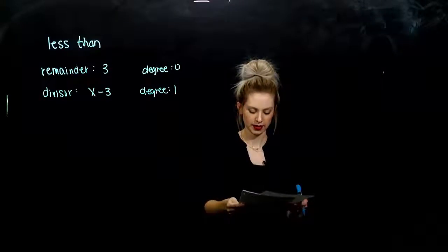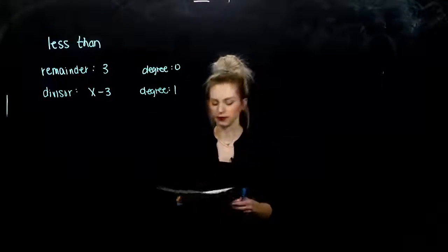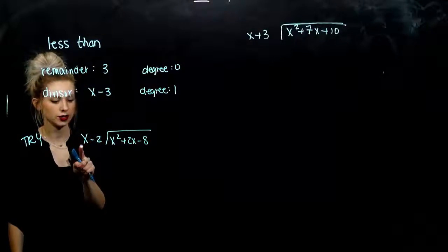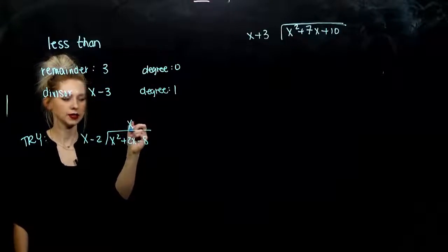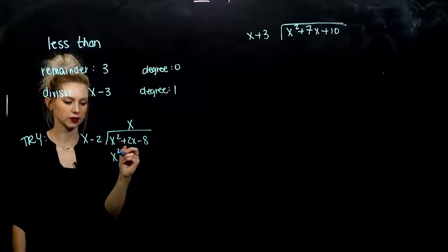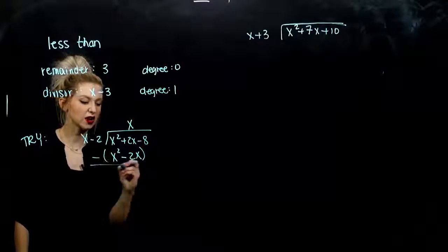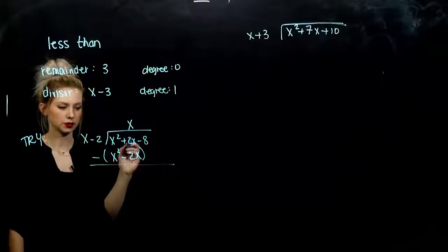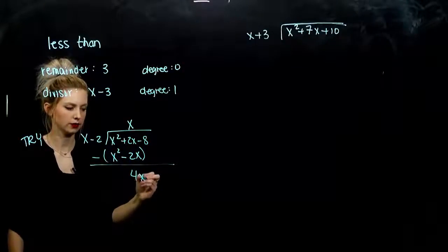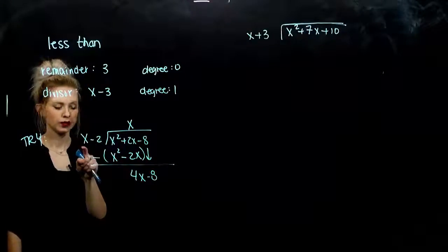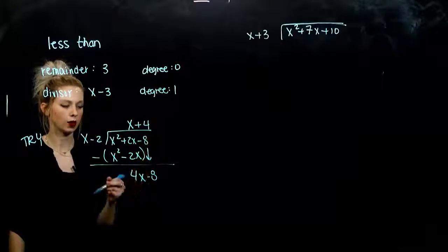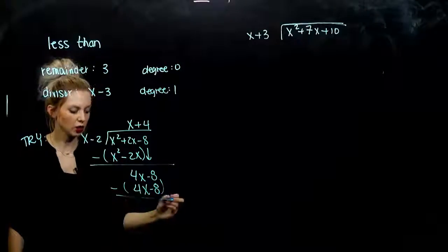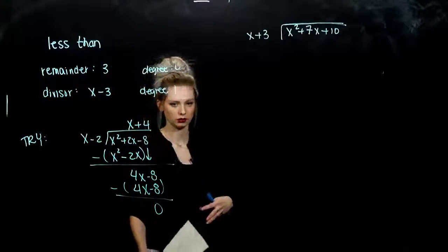Go ahead and take the next two examples. The first one: set up — first thing goes on the inside, what we're dividing by on the outside. First question: what do we need to multiply x by to get us here? x. Take that times each of them, writing it below, so we get x squared minus 2x. We're subtracting that entire quantity: the x squareds are gone, and 2x minus negative 2x gives me 4x. We bring down what's next, and ask again: what times x will get me here? Multiplying by 4. So 4 times x gives me 4x, and 4 times negative 2 gives me negative 8. Subtracting that entire quantity — everything is going to be gone. Remainder 0 tells us to stop.